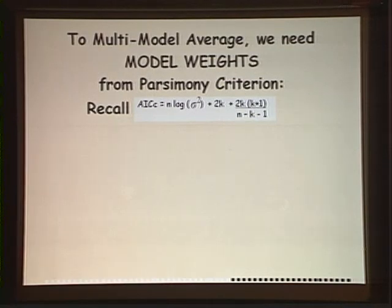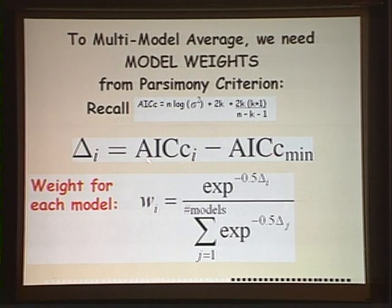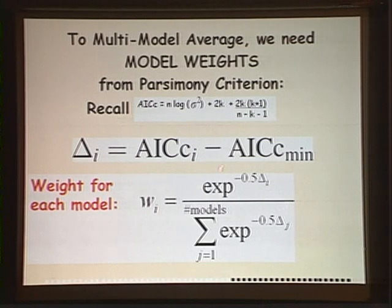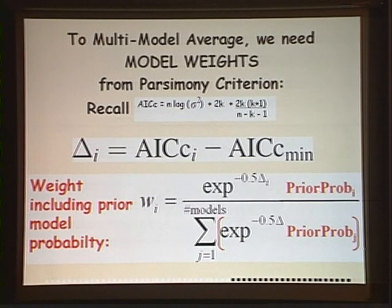To do multi-model averaging, we take our parsimony criterion — in this case AIC — and identify the best model as the minimum. We take the AICc values from all other models and subtract the minimum to get a delta value, which represents information loss on a log scale. To determine a weight for each model, we take e to the minus 0.5 times the delta value, normalize by the sum over all models, so the weights sum to one. If people have prior probabilities on their models, they can incorporate that prior probability into this calculation.